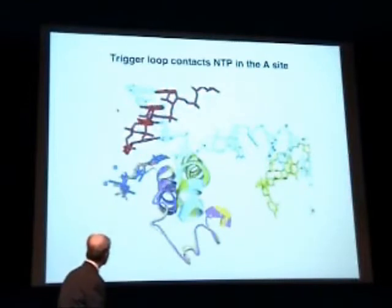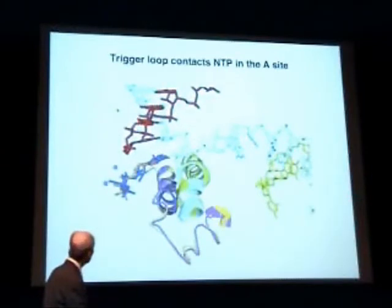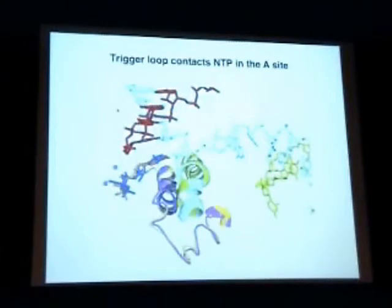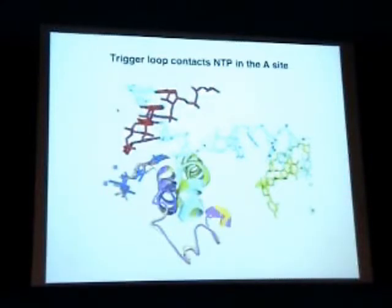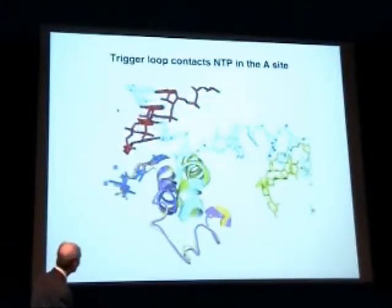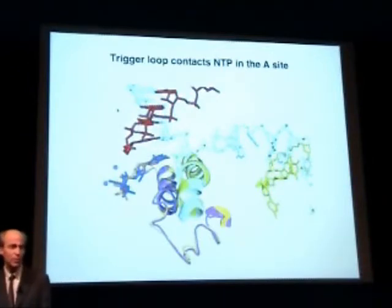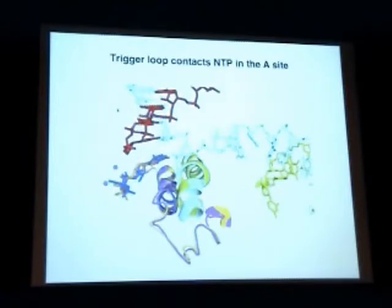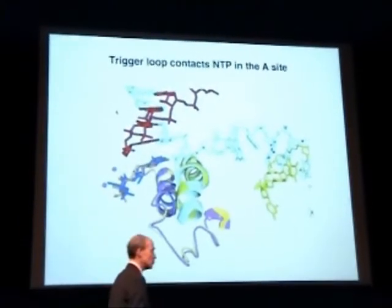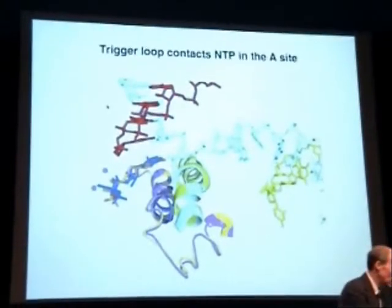The bridge helix, alluded to previously, is really too far to make contact with the nucleotide. The nucleotide is shown in orange for a purine and blue for a pyrimidine. Both structures were separately solved, and the corresponding trigger loops are purple and yellow. The bridge helix is much too far to make contact, but it does interact with the coding base on the template strand. The trigger loop is in close proximity and makes extensive interaction with the nucleotide triphosphate in the addition site.